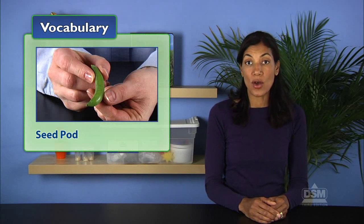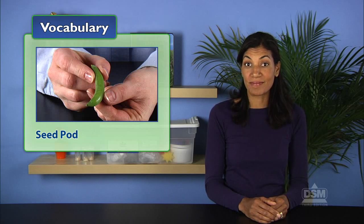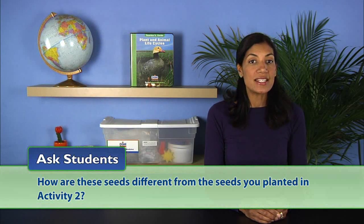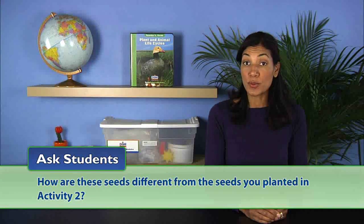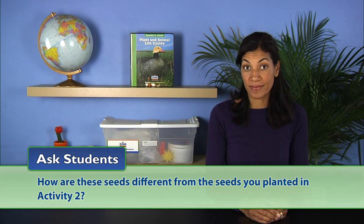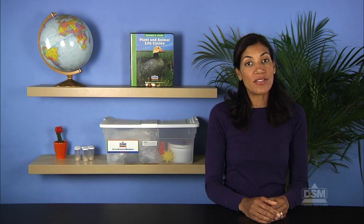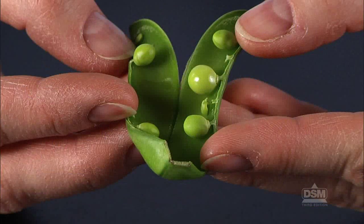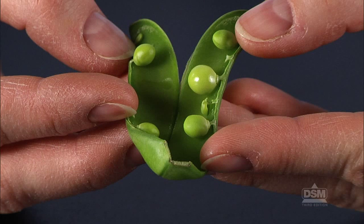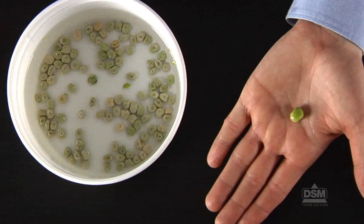Inform the class that a seed pod is a dry, hollow fruit with seeds in it. Then ask, how are these seeds different from the seeds you planted in activity two? Students should respond that these seeds are plump, moist, and green, whereas the seeds planted in activity two were wrinkled, dry, and tan.